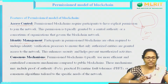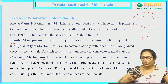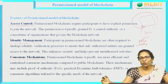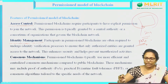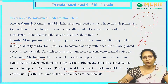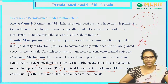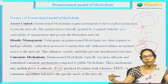Coming to the consensus mechanism — in a public blockchain, we do not know the users, so we use the proof of work mechanism where a mathematical puzzle is given and whoever solves it validates the transaction. In permissioned blockchain, we basically use proof of authority or practical Byzantine fault tolerance. In proof of authority, it is similar to a voting mechanism — whoever gets more votes will be the person who validates the transaction.